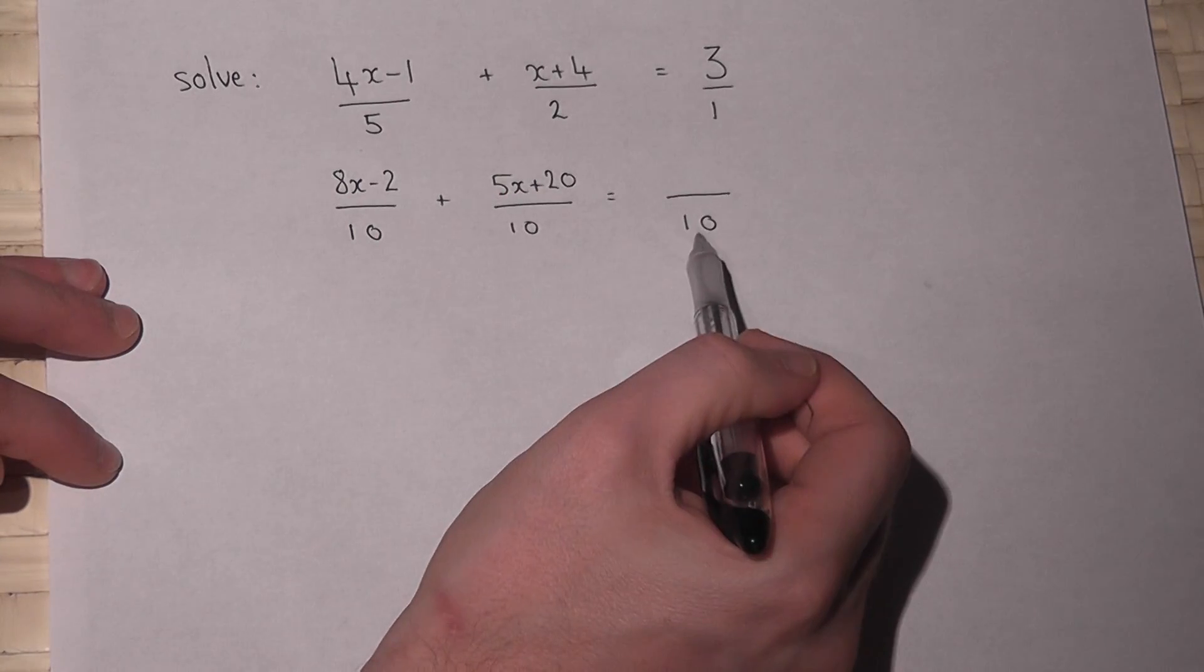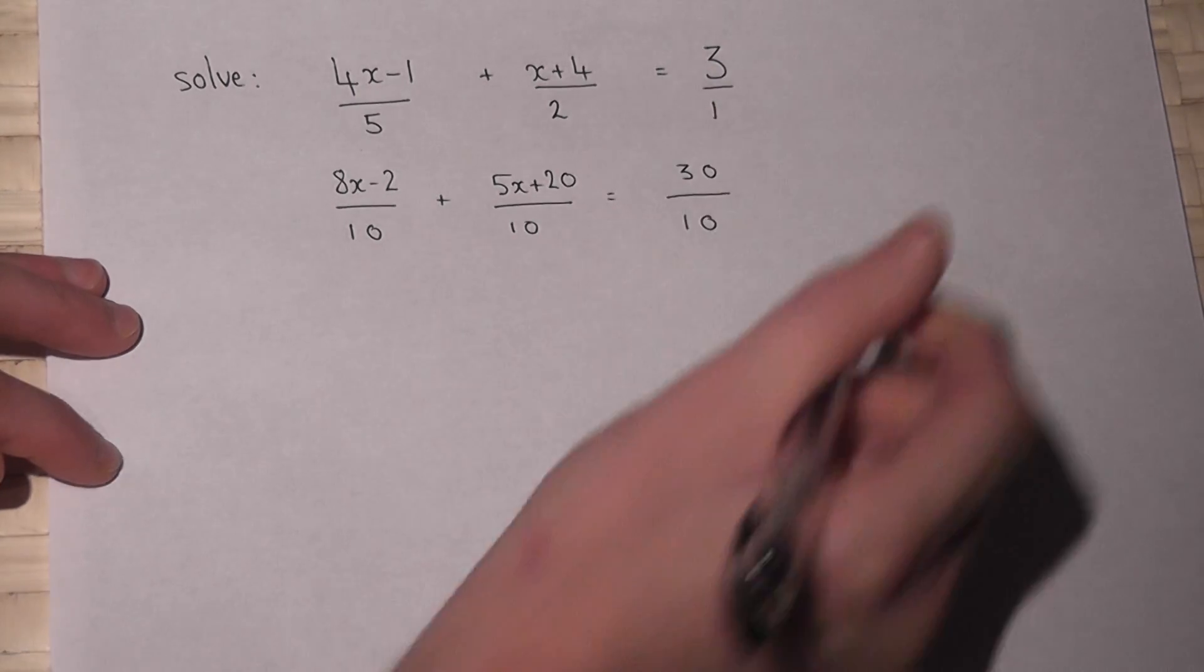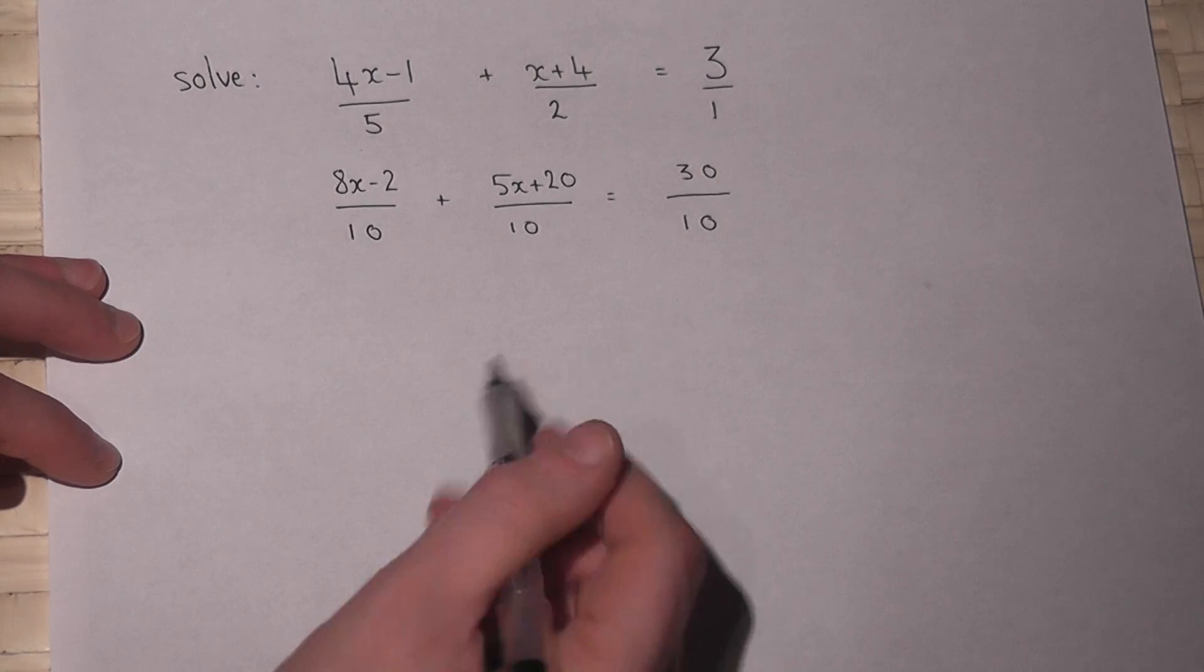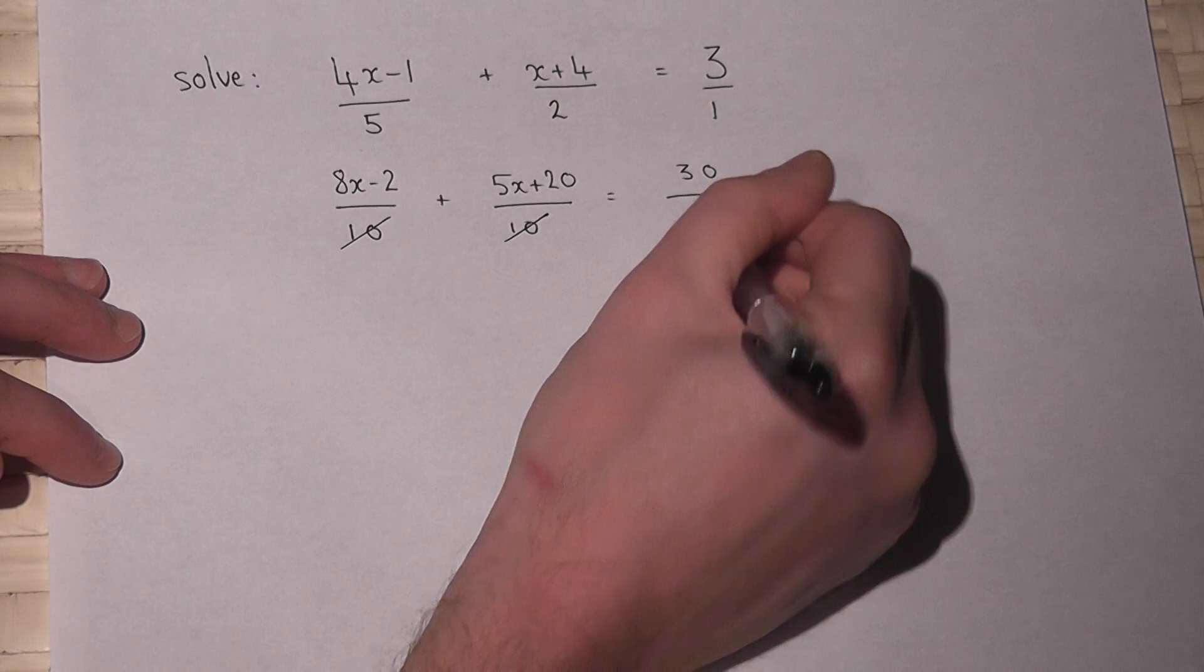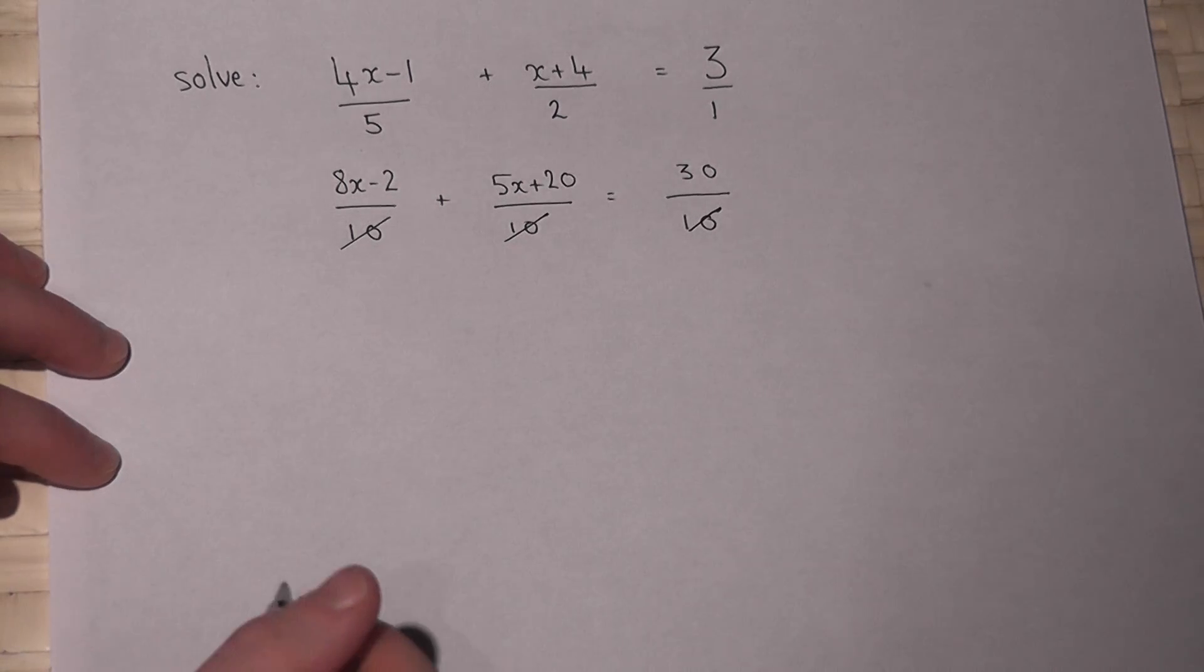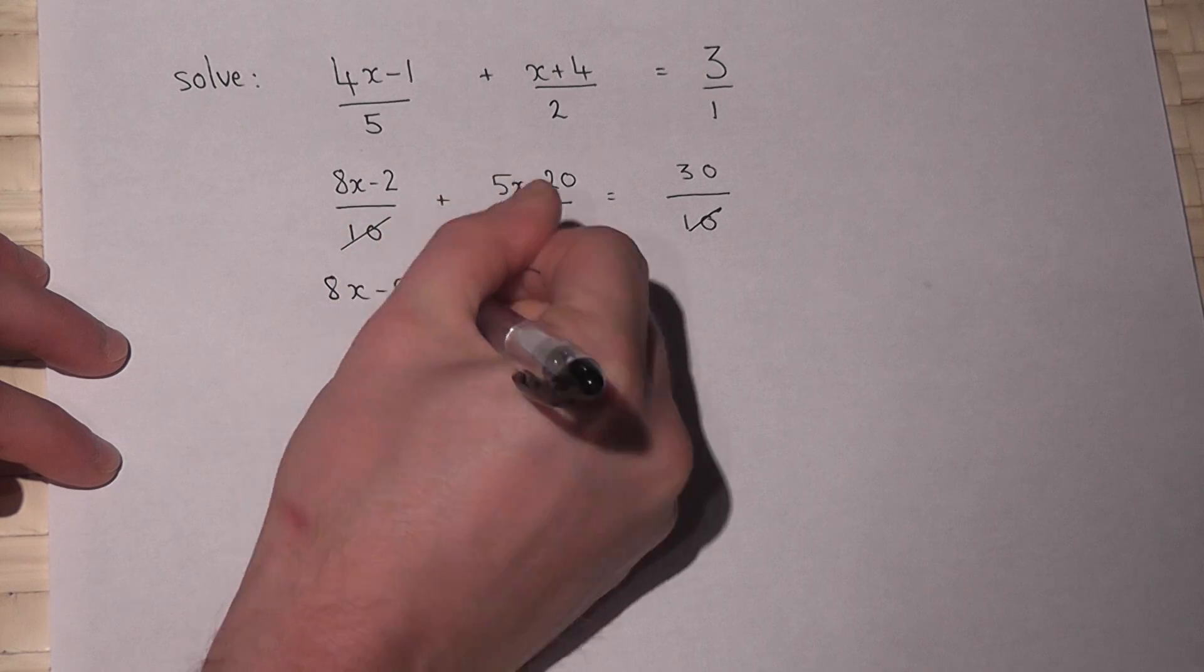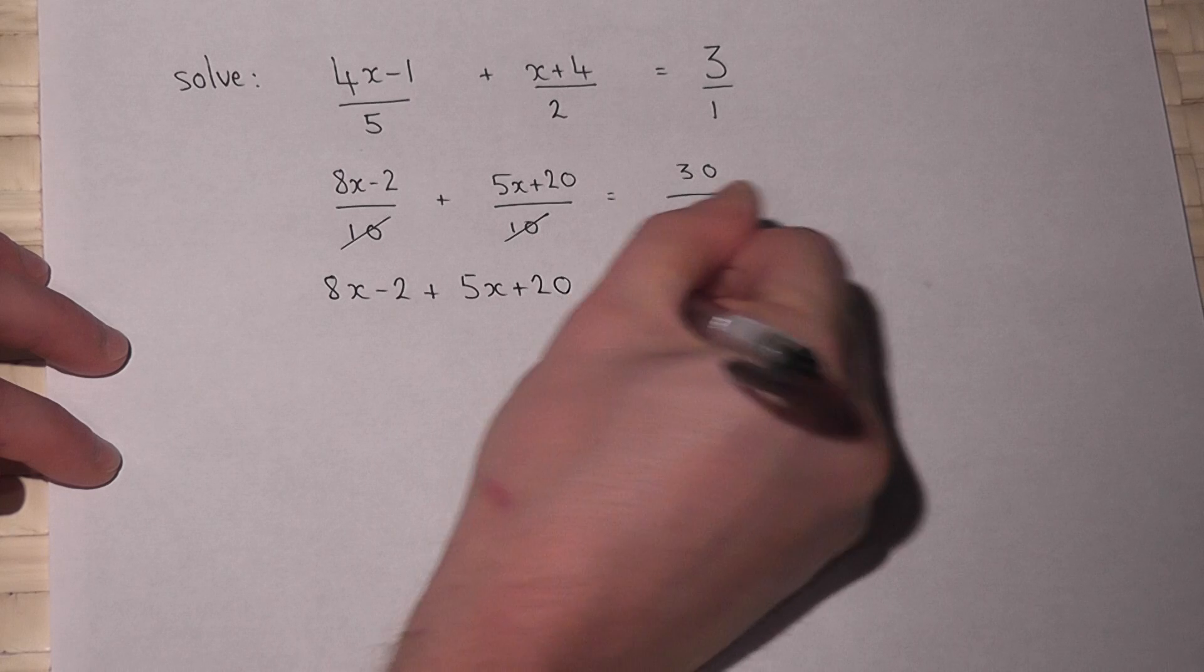This has been times by 10, so times the top by 10 I get 30. Now because they all now share the same denominator, I can basically cross off the 10 by times it by 10, it cancels out. So the equation becomes 8x take away 2 plus 5x plus 20 equals 30.